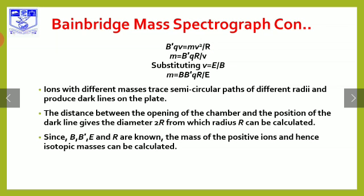The distance between the opening of the slit and the position of the dark line gives the diameter 2R, from which the radius R can be calculated. From R, the isotopic mass of the ions can be determined.